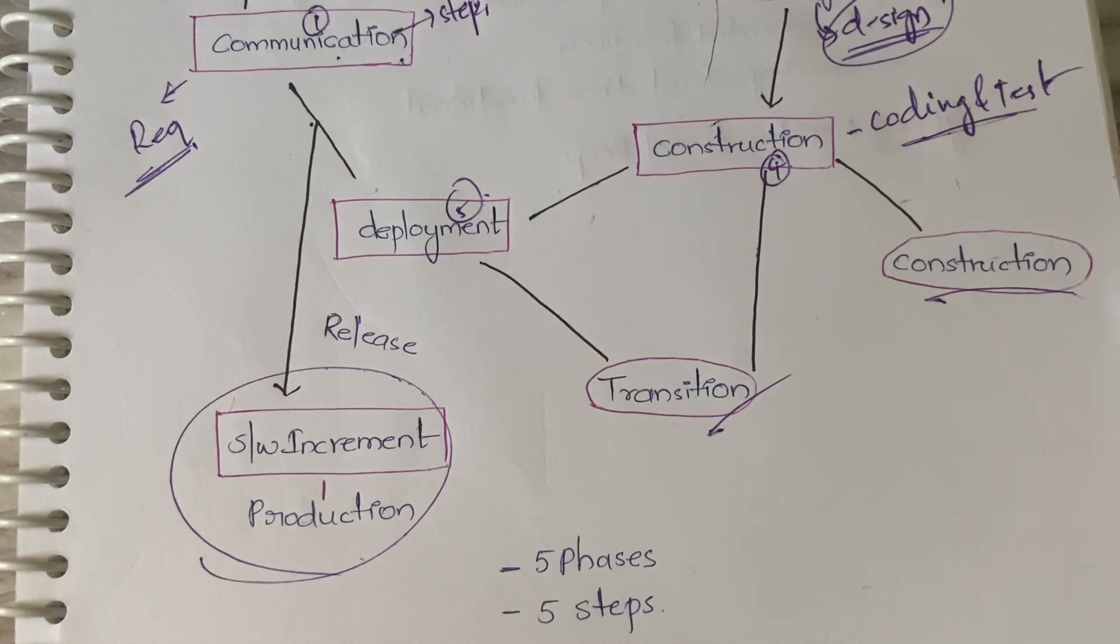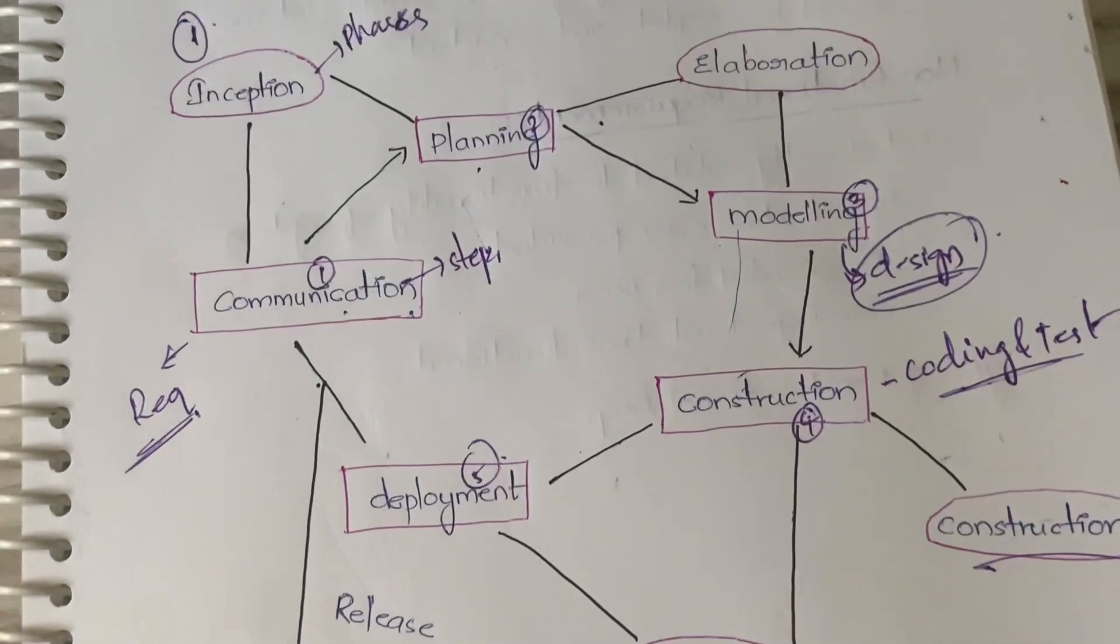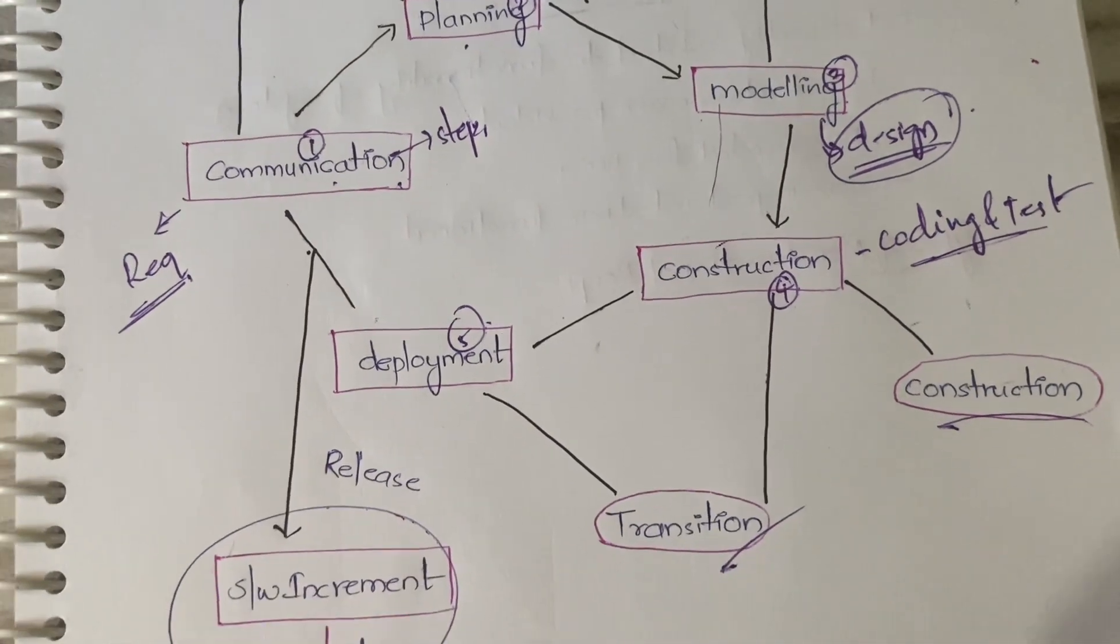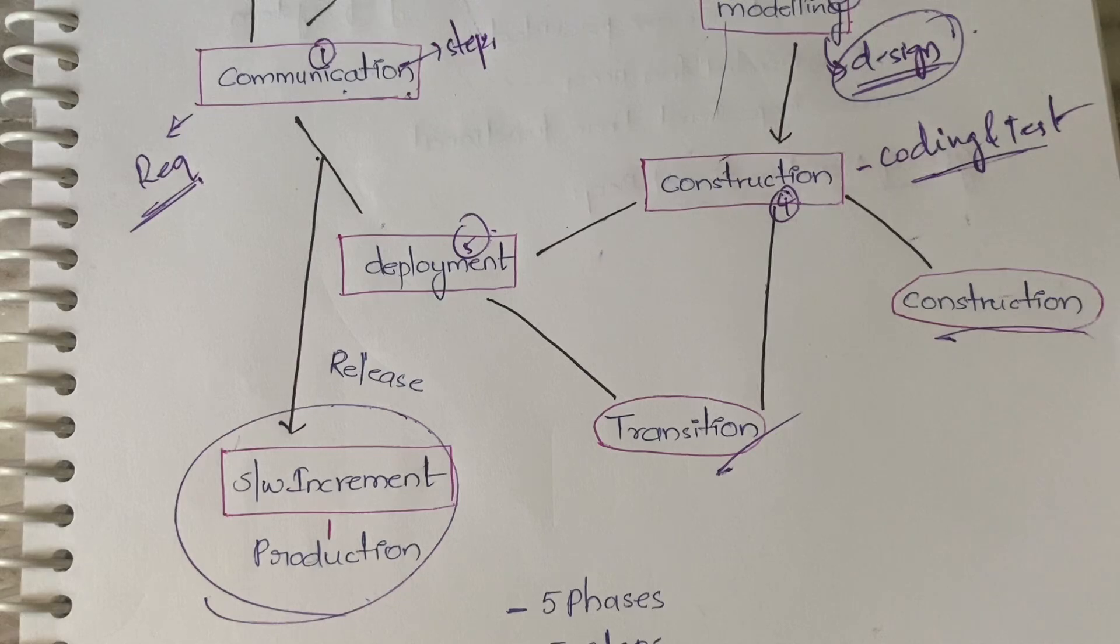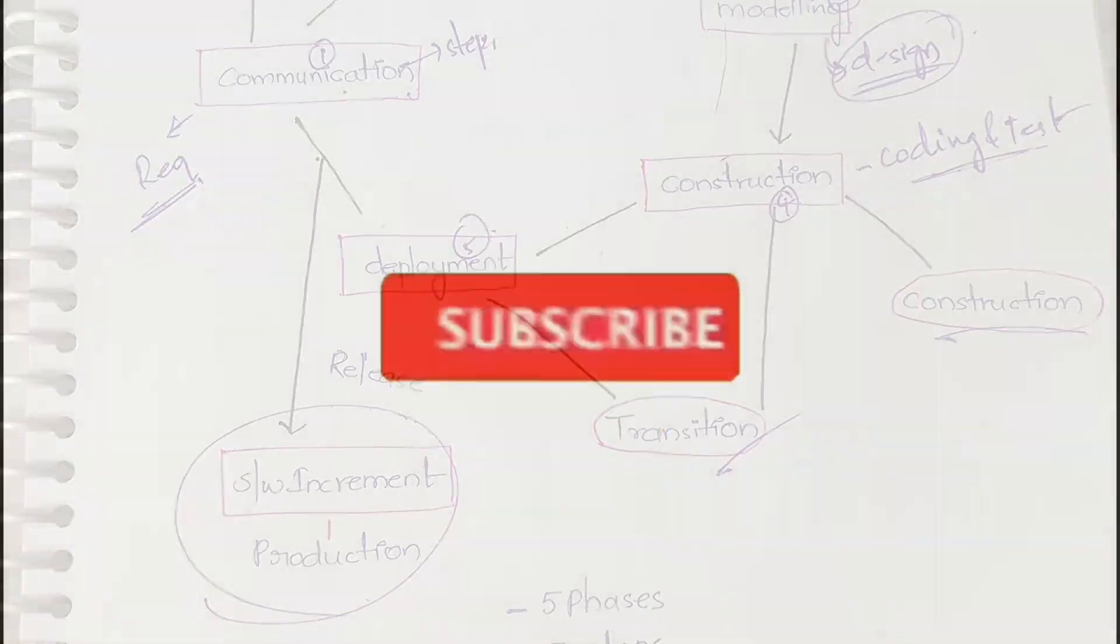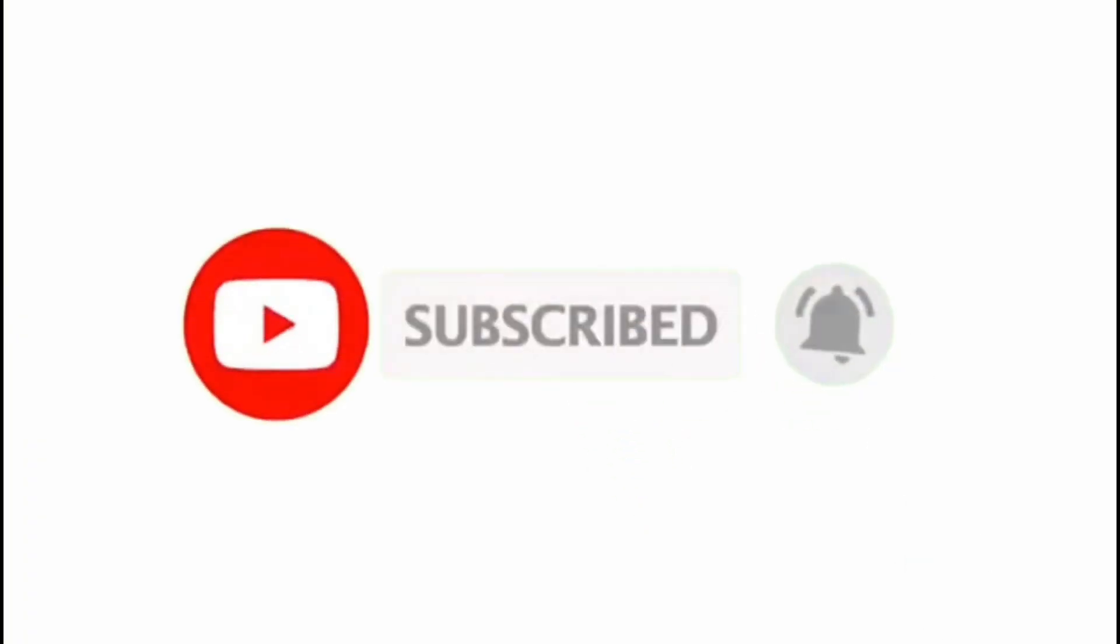It has five steps, five phases, and that's all for this video on unified process model. If you are not able to understand the video at any part, let me know in the comment section. This is the end of chapter one according to JNTUH syllabus. From the next video onwards I am going to start the second chapter about requirements. Thanks for watching the video till the end, let's meet up soon in the next video.